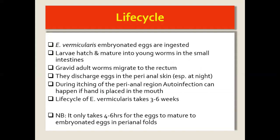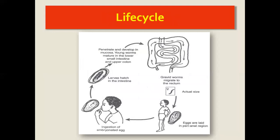The egg deposition normally leads to itchiness, called pruritus ani. When the person scratches, their fingers may end up in the mouth, causing auto-infection. Auto-infection occurs because the released eggs — which are initially immature — become embryonated within just a few hours. So if eggs are released at night, by early morning when you touch the area due to itchiness, the eggs are already embryonated and can easily cause auto-infection.